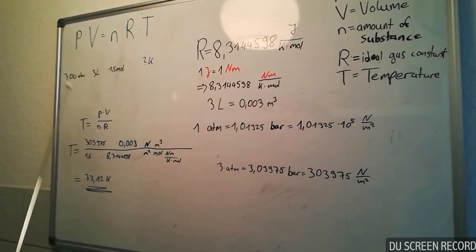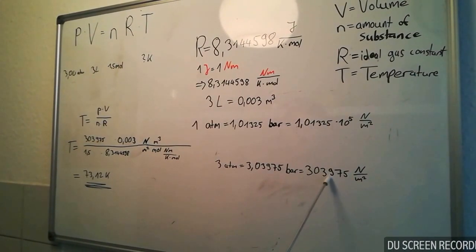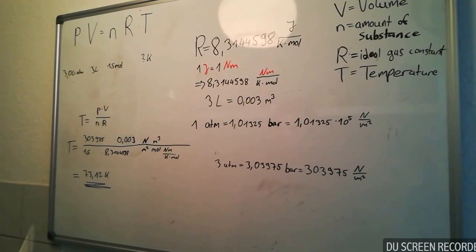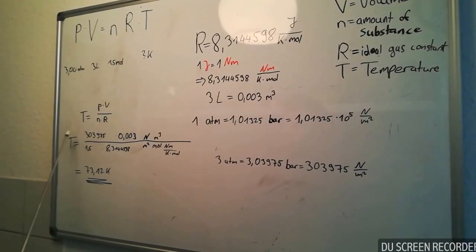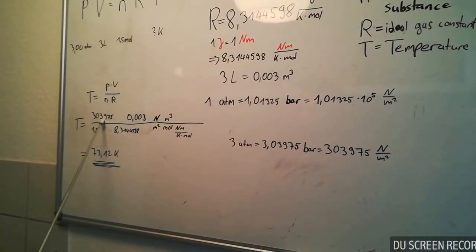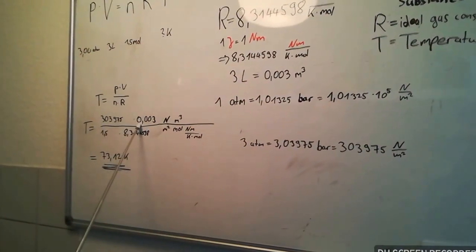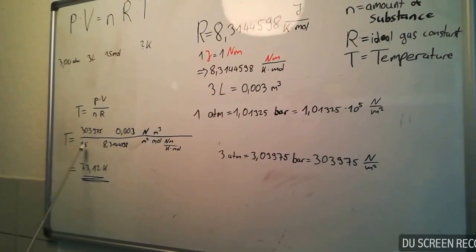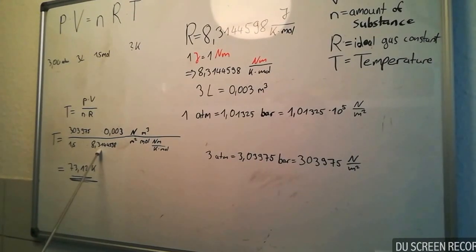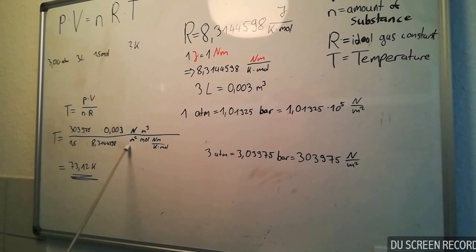So, our 3 atm's would be 3,975 newton per square meter. And if we put all these terms in our formula, we have 303,975 multiplied with 0.003 divided by 1.5 multiplied with 8.3144598, and the units are written behind.